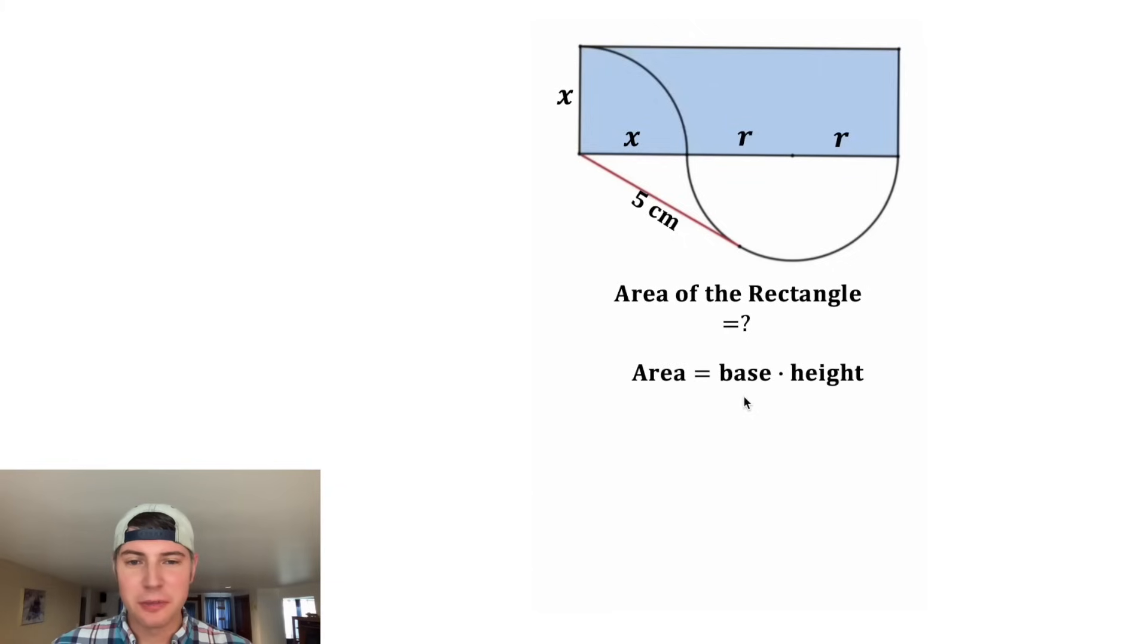The area of rectangle is base times height. The base is going to be equal to x plus 2r and the height is going to be equal to x. And then we can distribute this x. x times x is going to give us x squared, and x times 2r is going to give us 2xr. And this is a very nice formula for the area.